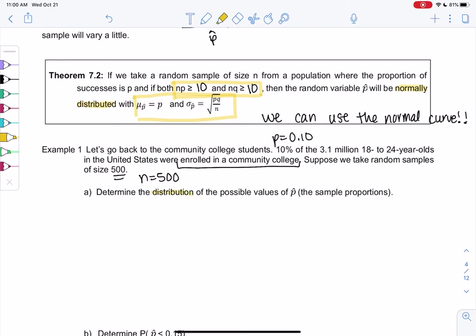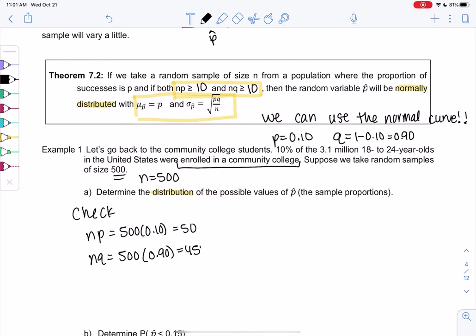So if we're going to check np and nq, and if they're big enough, then we can use the normal curve. So np will be 500 times 0.10, which gives me 50. And then nq, you can do 1 minus p or maybe you remember q was 0.90 for 1 minus 0.10. And we get 450. And then since these are at least 10, it means my sample is big enough. The requirement is met for normal. So that's good news. We like the normal curve. So we'll say p-hat is normal. That's the distribution.